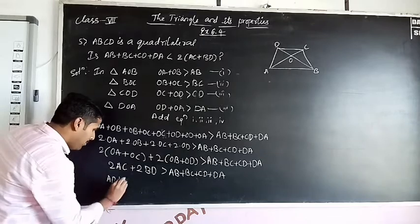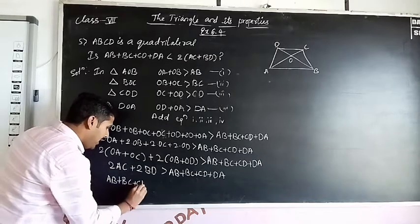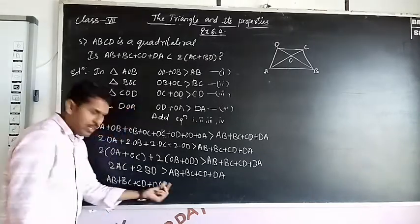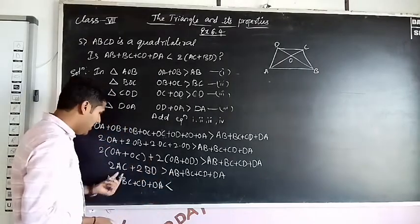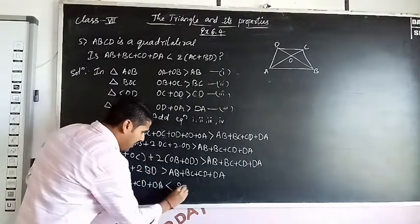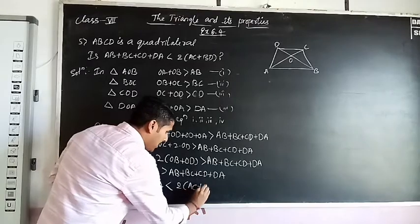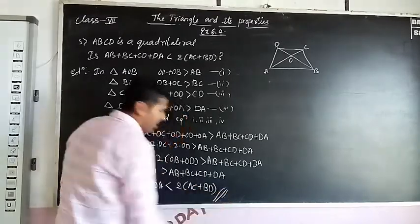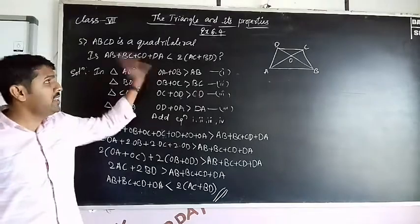We will get AB + BC + CD + DA is smaller than two times AC plus BD. This is the way of showing the theorem.